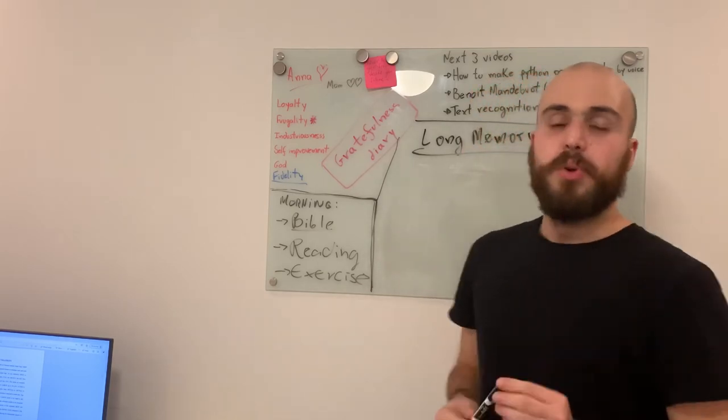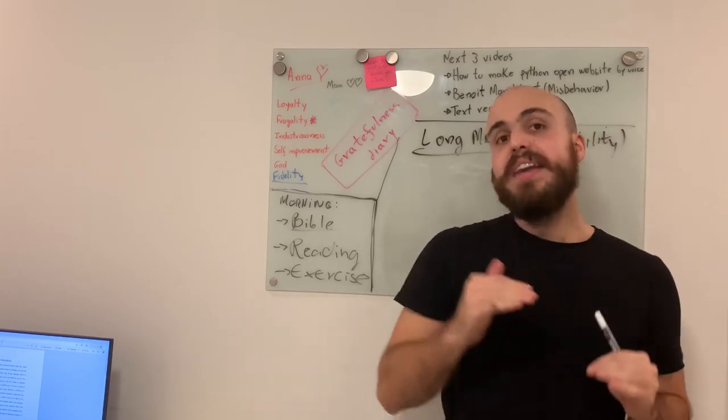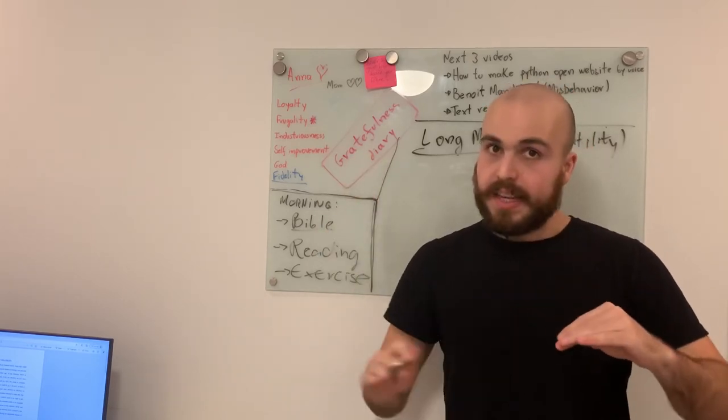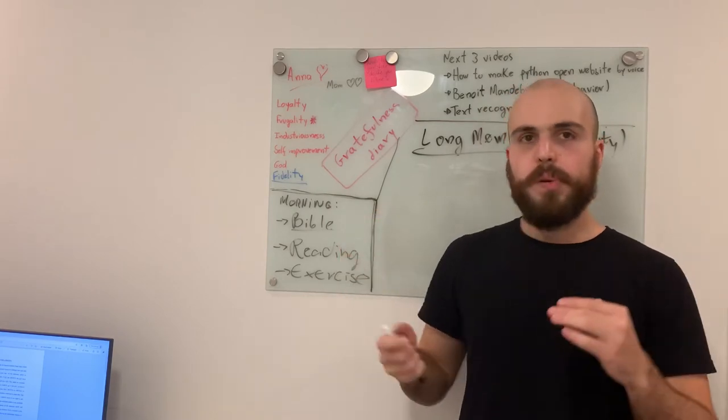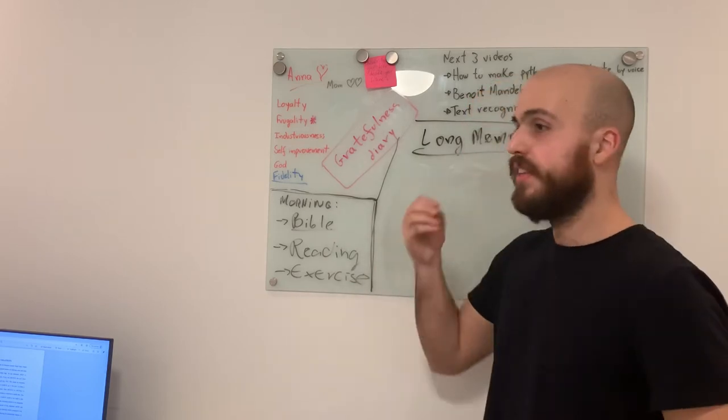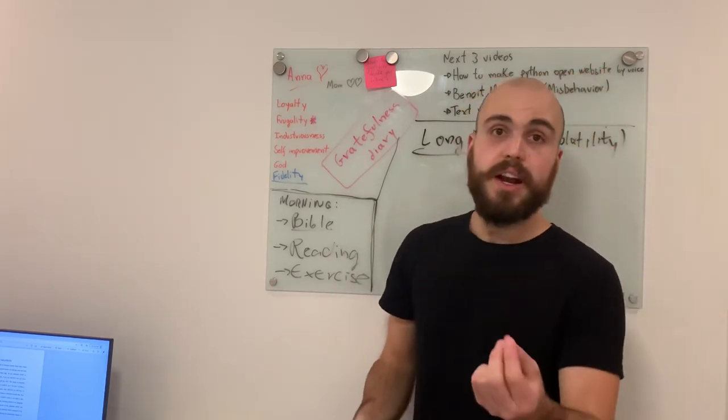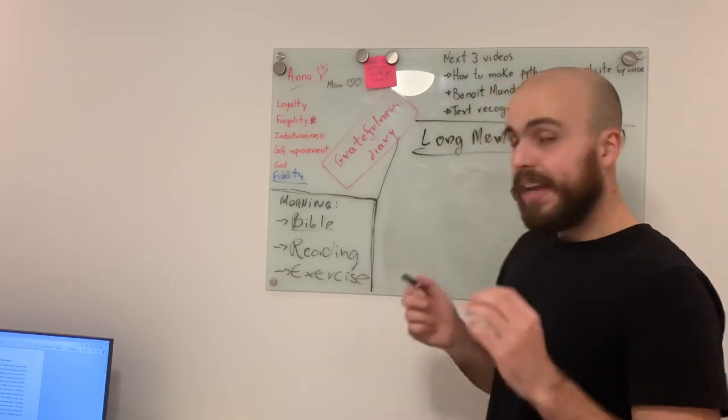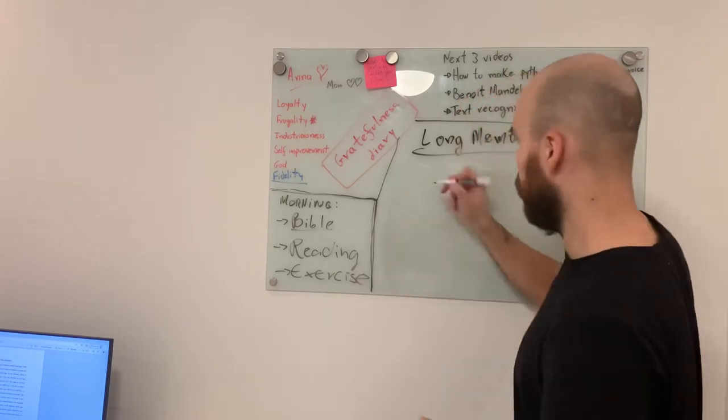So what is long memory? A long memory is a higher time autocorrelation compared to the implied autocorrelation in the model. For example, we have the stationary GARCH, the stationary ARCH and GARCH(1,1), and they assume that the autocorrelation decays exponentially.